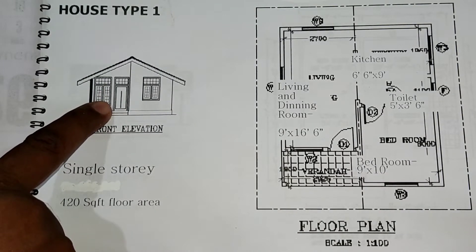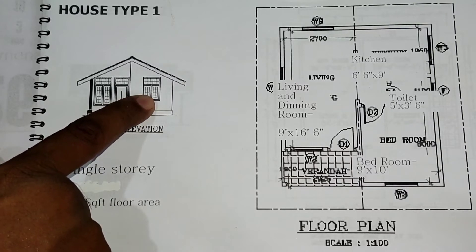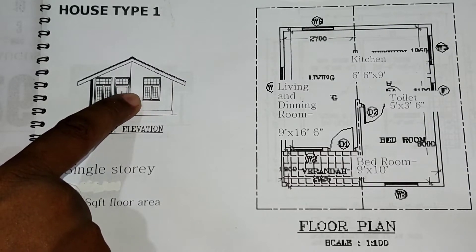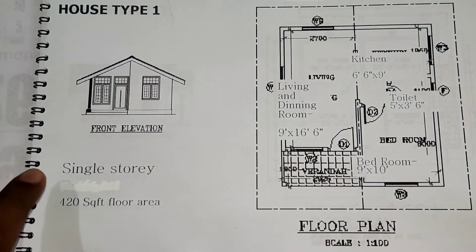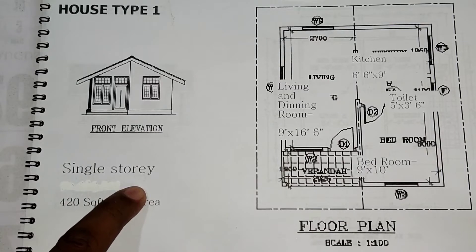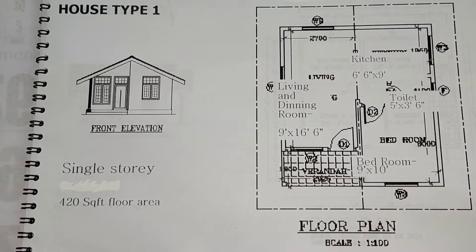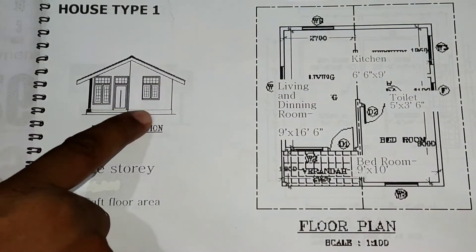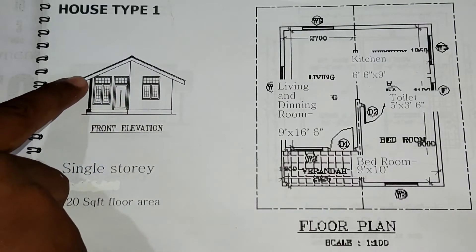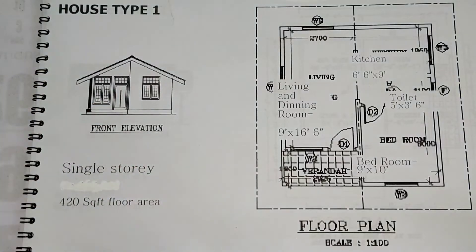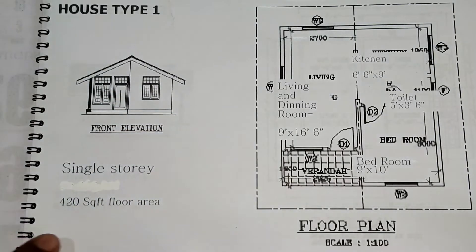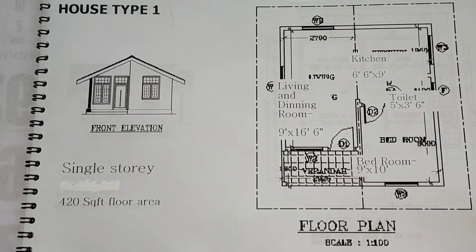This is the veranda area and there's a room at this side, which will be better understood by going through the plan. This is a single story house, meaning it exists with only one single floor. You can see only the ground floor level, and with the roof it finishes. Normally the floor area of this sort of house is 420 square feet.